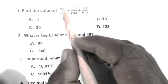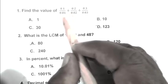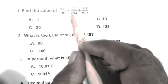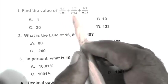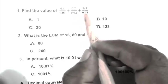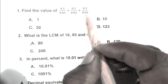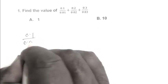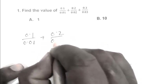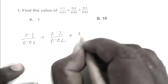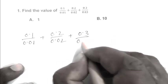Question number 1. Find the value of 0.1 upon 0.01 plus 0.2 upon 0.02 plus 0.3 upon 0.03.